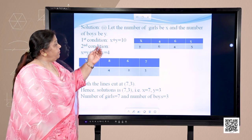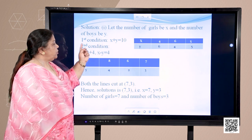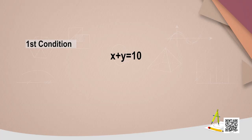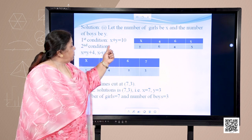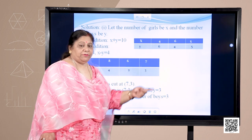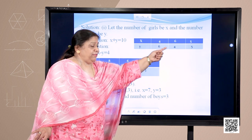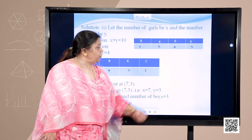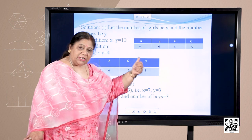Here we have number of girls to be x and boys to be y. So the first condition was x plus y is equal to 10. A very simple equation — when I take x is equal to 4, obviously y is equal to 6; when the number of girls is 6, the boys have to be 4; and if the number of girls is 5, obviously boys will also be equal to 5. These are the points for the first equation.